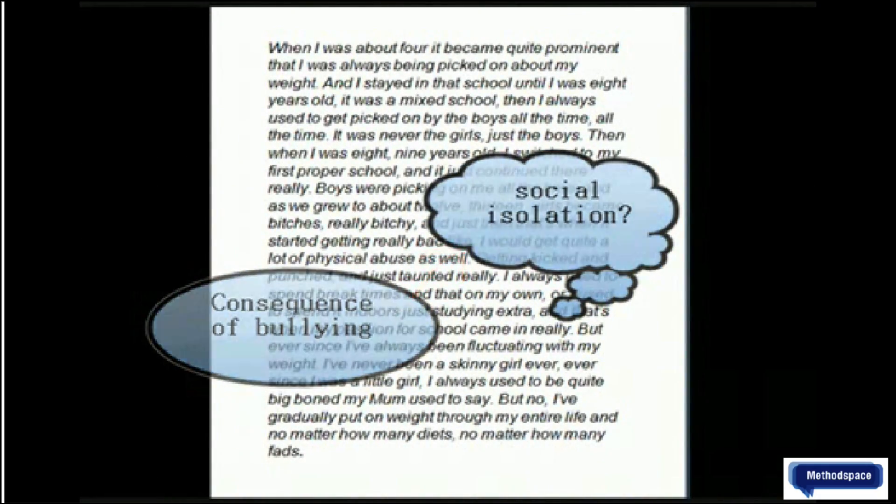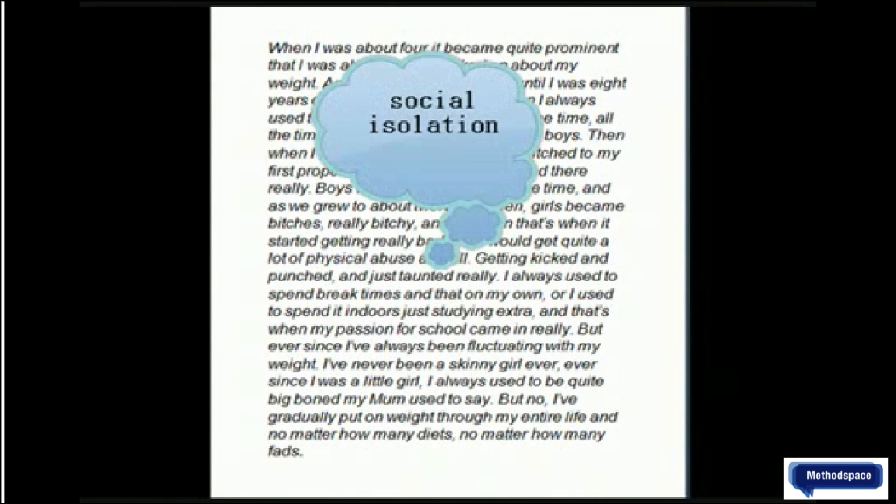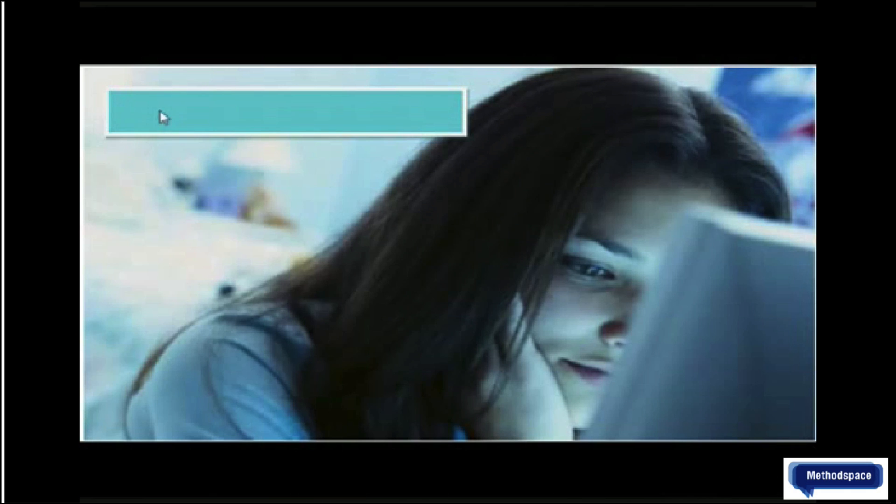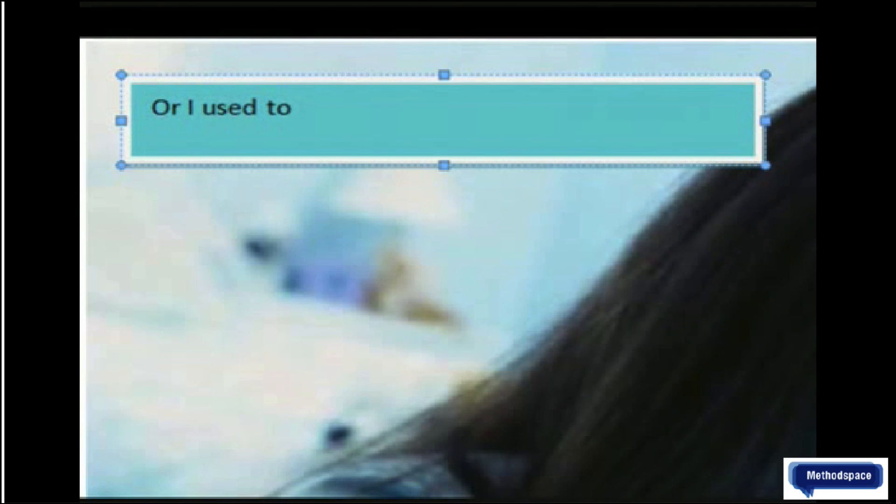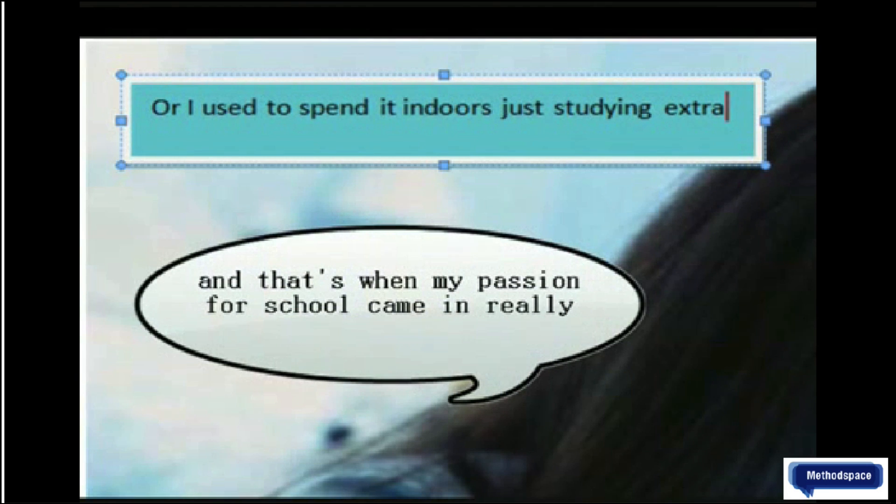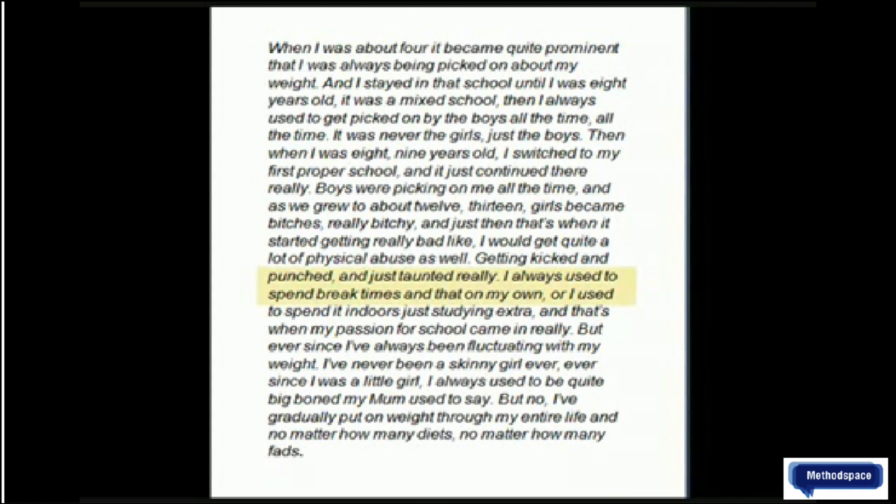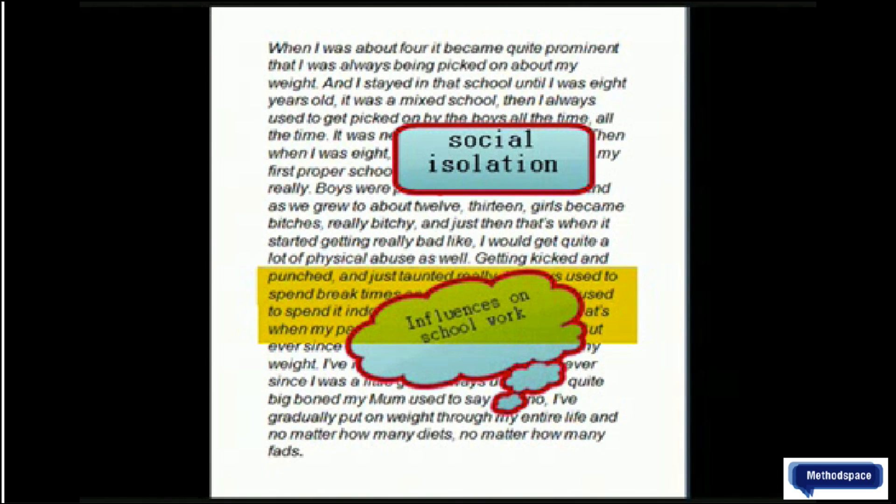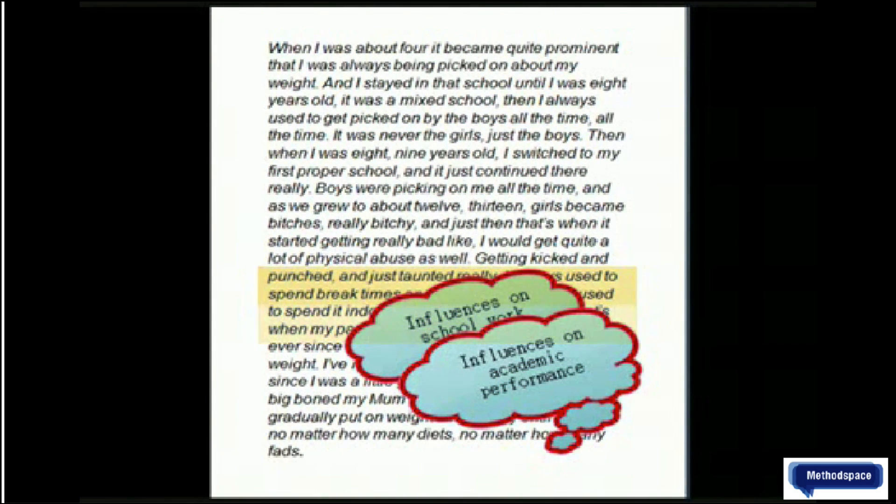I'm not sure if it should just be coded as social isolation or isolating or self-isolating. Because this is not people ostracizing her. This is her choosing to spend time on her own. So it's perhaps a wider category just social isolation would be the best name for that theme. I think we should code it all the way to and that's when my passion for school really came in. When I picked out, I would code the first half as social isolation and then that entire theme there as influence on school work or influence on academic performance.